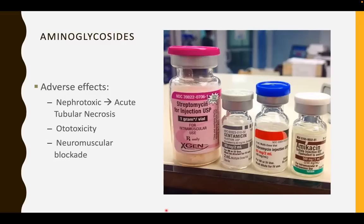Don't forget there's another drug that shares these two side effects — nephrotoxicity and ototoxicity — and that is the antineoplastic cisplatin. Aminoglycosides are notorious for causing neuromuscular blockade; therefore, they are contraindicated in patients with neuromuscular junction disease such as myasthenia gravis.